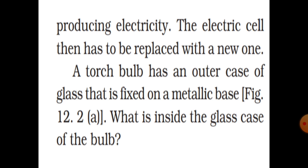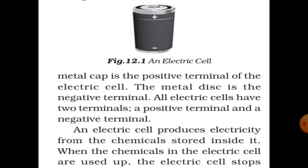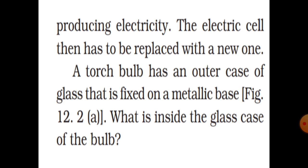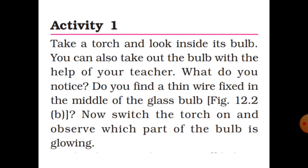When the cell is used up, it has to be replaced with a new one. A torch bulb has an outer case of glass fixed on a metallic base. Inside the glass case there is a filament and terminals. Activity: Take a torch and look inside the bulb. You can also take out the bulb with the help of your teacher.